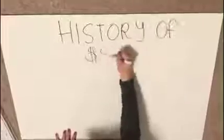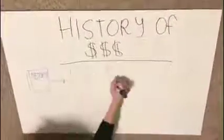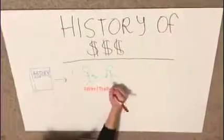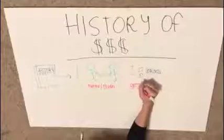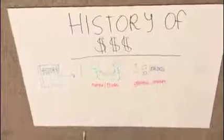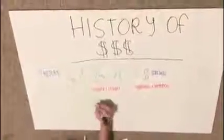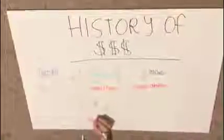We could honestly write a whole book on the history of money, but to put it simply: before there was actually money, people would barter and trade. Over time, money shifted to symbolic currency, then eventually gold and silver coins, then banknotes, and eventually paper money.